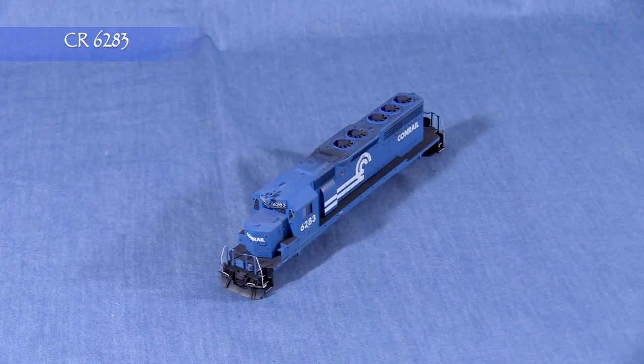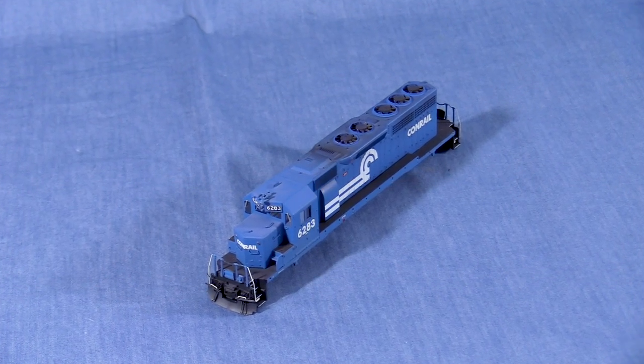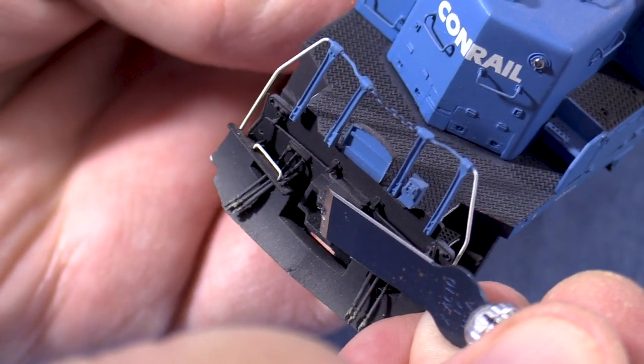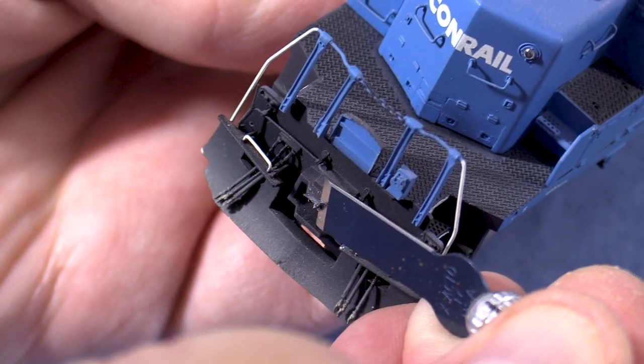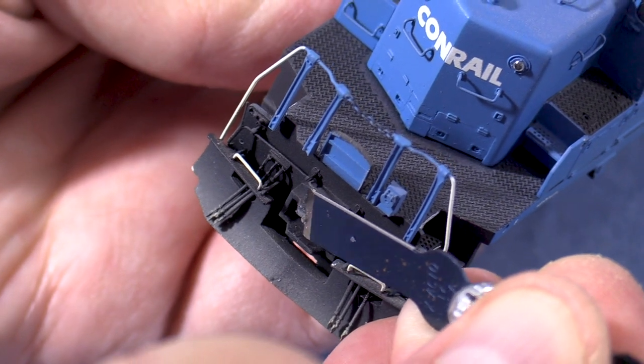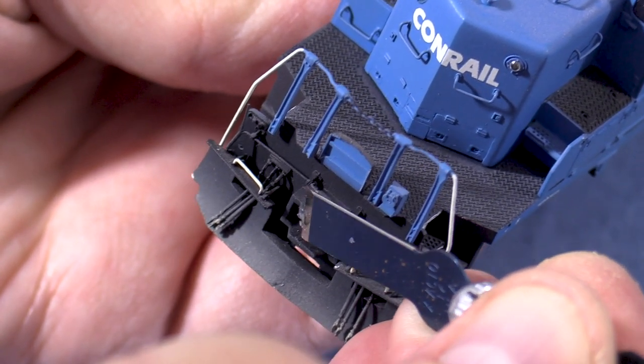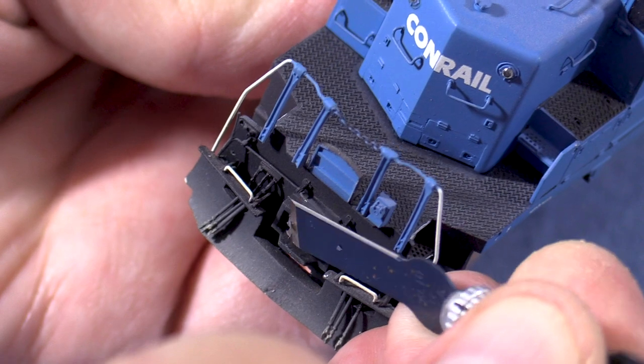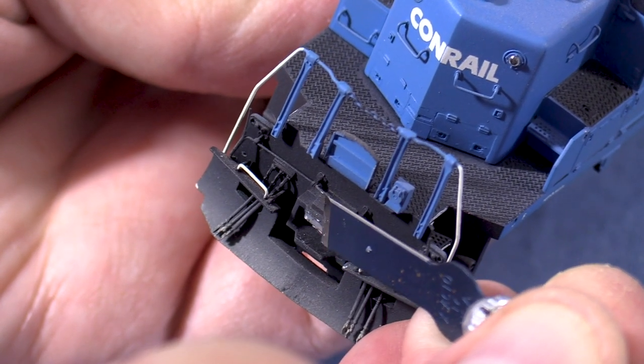The main difference is that I have to be careful because of all the detail on the pilots. I'll start by removing the trapezoid shapes from the pilots. Since this model has a plow in front, I'll skip the sprue cutters and go directly to the number 17 blade. I'm shaving little bits at a time so that I don't damage anything. It's tedious, but if I break something and have to fix it, that'll take even more time.